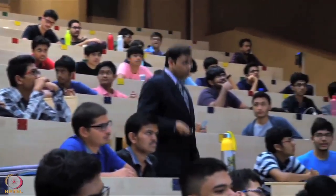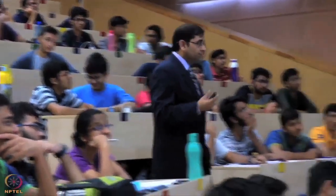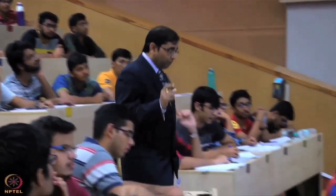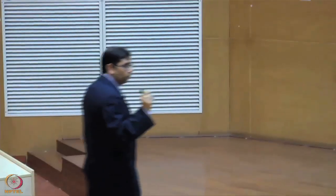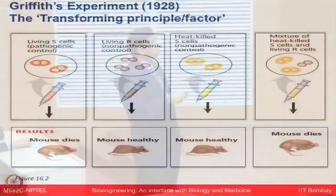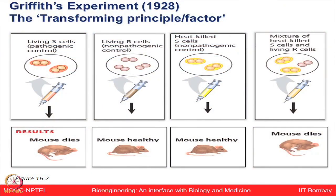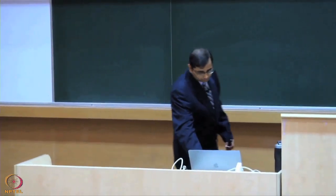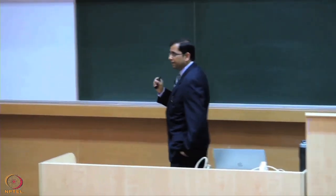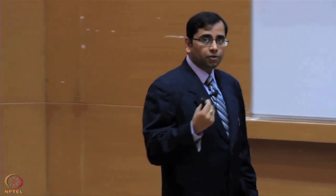What Griffith concluded from this experiment was that if we are injecting both non-pathogenic and pathogenic bacteria, there is some kind of transformation happening. Some substance is moving from the S cells to the R cells and that is giving it the property which is making it much more pathogenic and causing the mouse to die.